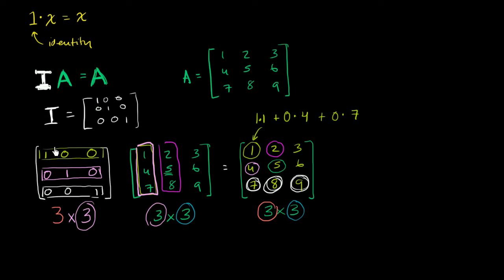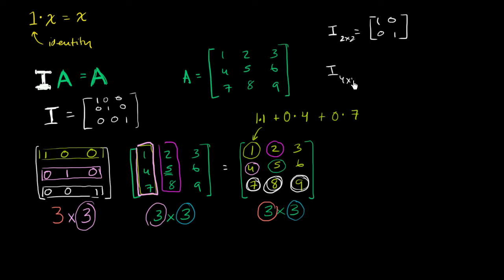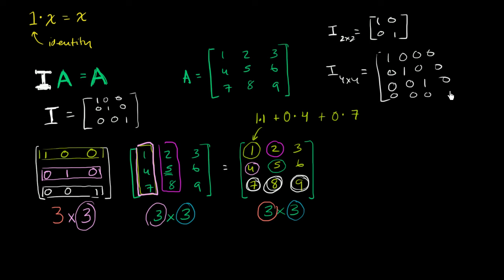Whenever you construct an identity matrix, you'll see a very similar pattern. The 2 by 2 identity matrix is: 1, 0; 0, 1. The 4 by 4 identity matrix is: 1, 0, 0, 0; 0, 1, 0, 0; 0, 0, 1, 0; 0, 0, 0, 1. You essentially just have 1s down the diagonal going from the top left to the bottom right.